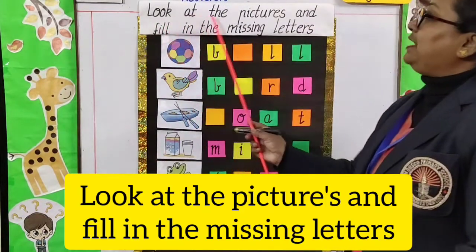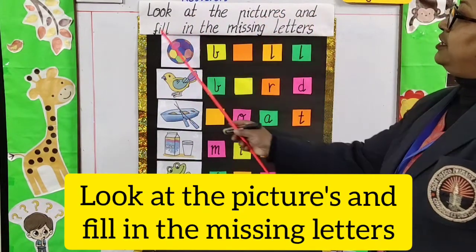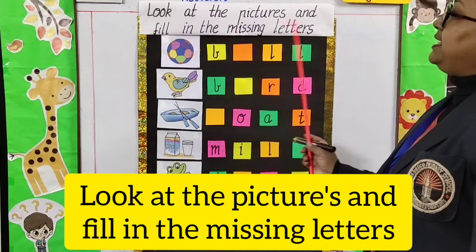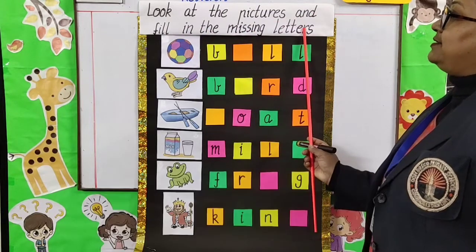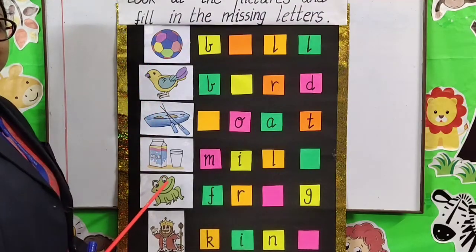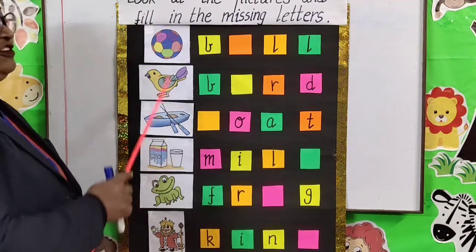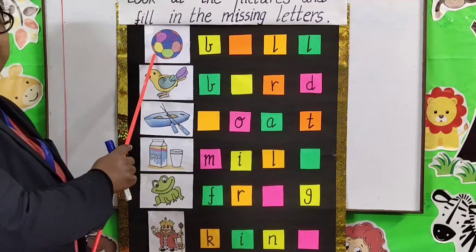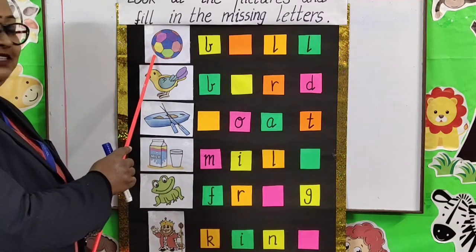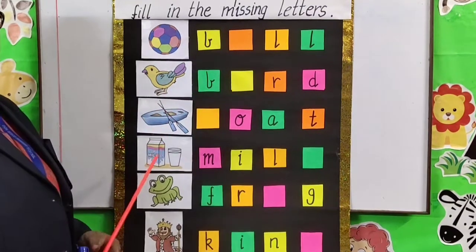Look at the pictures and fill in the missing letters. Children, here are some pictures. What do you have to do? You have to observe the picture nicely and fill in the missing letters.